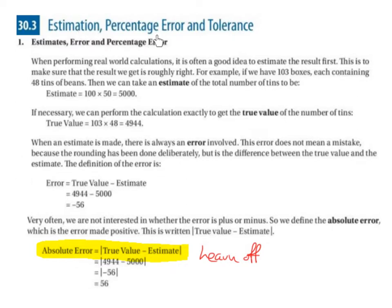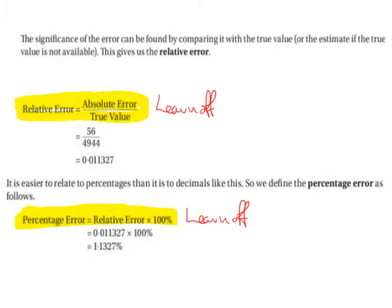Estimation, Percentage Error and Tolerance. Part 1: Estimates, Error and Percentage Error. We need to understand estimates, true value, and error. The formula is: absolute error equals the modulus of true value minus the estimate — modulus meaning the positive value. Relative error is absolute error divided by true value. Percentage error is relative error times 100%. We need to learn both of these formulas off by heart.